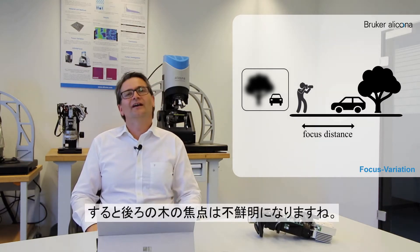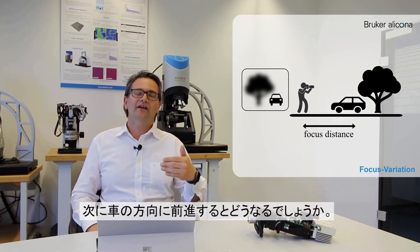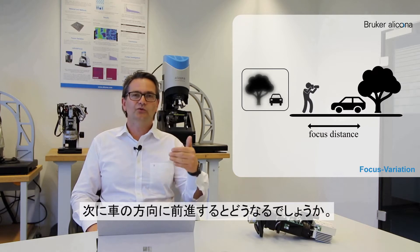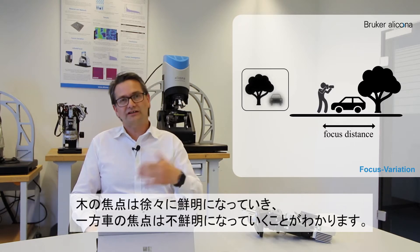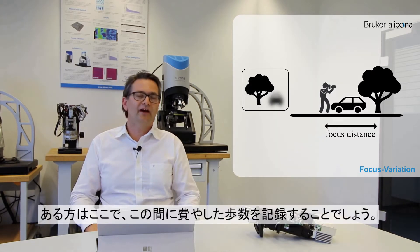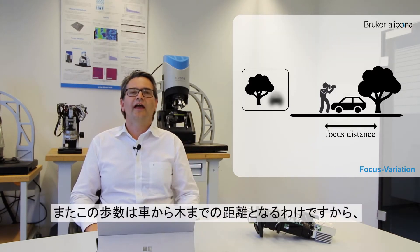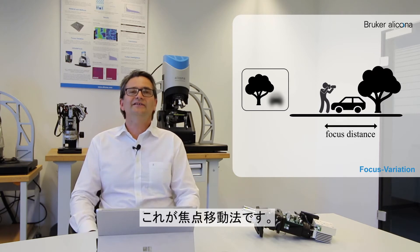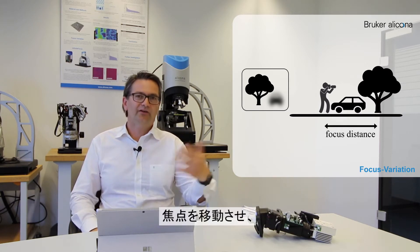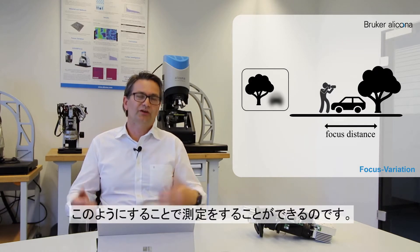In this situation the guy focuses on the car at first, and the tree is out of focus. When the guy with the digital camera moves in the direction of the car, the tree gets in focus and the car gets out of focus. If the guy is clever and has recorded the steps he was going toward the car, that number of steps is the distance between the car and the tree — he has measured something. This is focus variation.